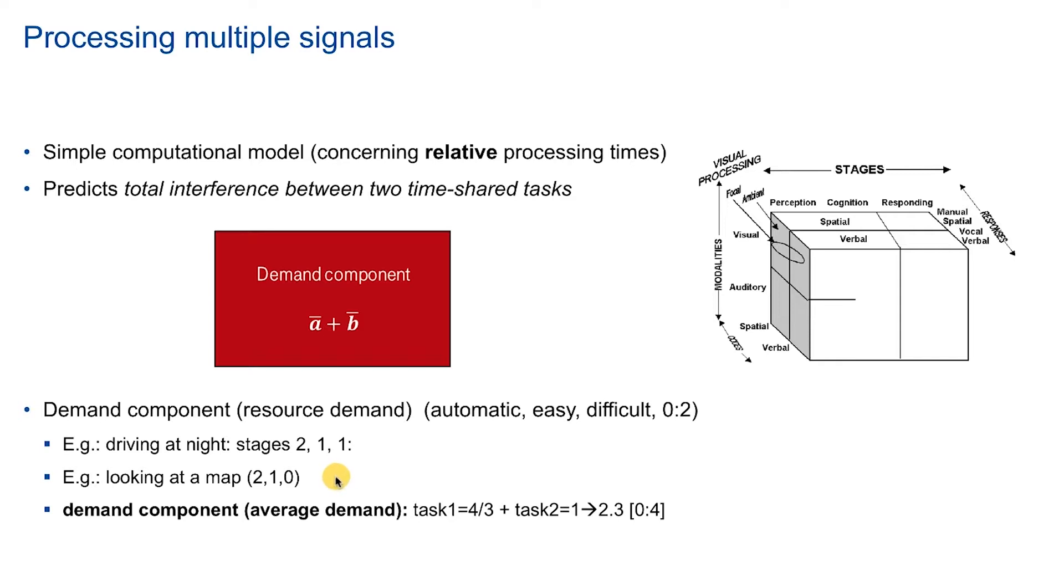Looking at the map at the same time would again be quite difficult from the perceptual point of view. But the stages, cognition would be easy and responding would be zero because there's actually nothing to do except for holding the map for a short while. So if we now compute the demand component, we just average these three values and add them up of the two tasks. This would result then in the number 2.3 if we have values from 0 to 4.